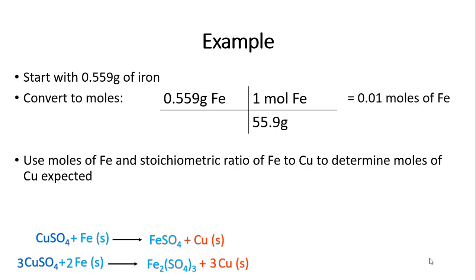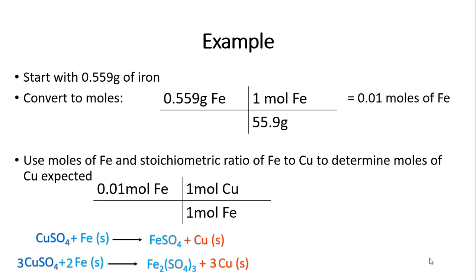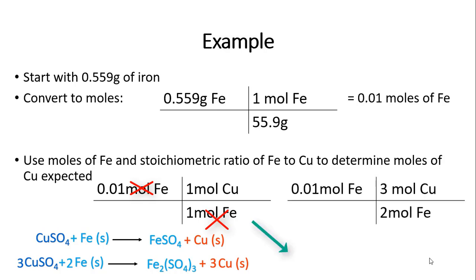I can use the moles of iron and the stoichiometric ratio of iron to copper to determine the expected moles of copper. Using the first reaction, the iron-to-copper ratio is one to one. So 0.01 moles of iron times one mole of copper over one mole of iron gives 0.01 moles of copper.